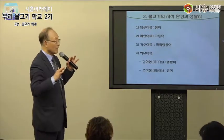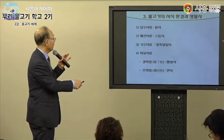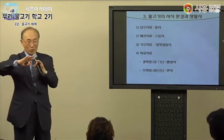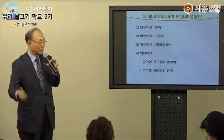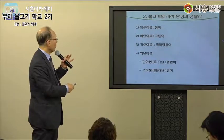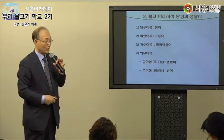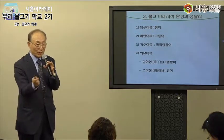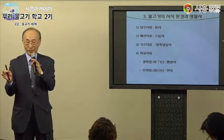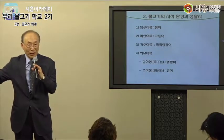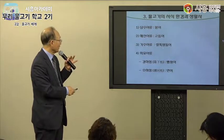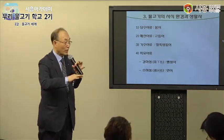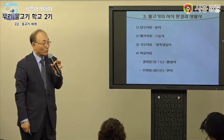물고기가 사는 장소에 따라 구분됩니다. 민물에 사는 물고기를 담수어류라 하고, 바다 속에 사는 물고기도 있습니다. 갯가에서 민물과 썰물이 왕래하는 기수 지역에 사는 물고기도 있는데, 이 갯골에서는 말뚝망둥어가 살고 있습니다. 부레가 없어 바닥을 기어다니는 망둥어 종류만 해도 약 2천 종류가 됩니다.